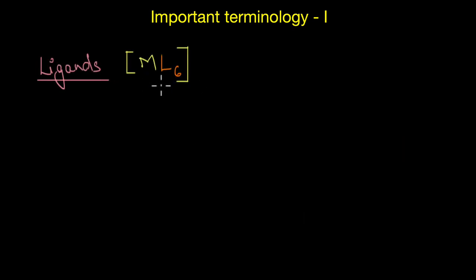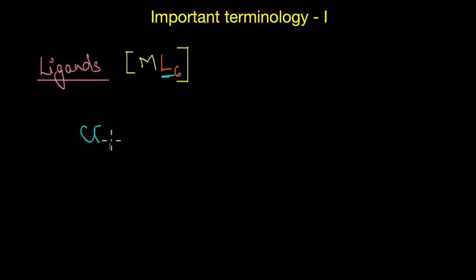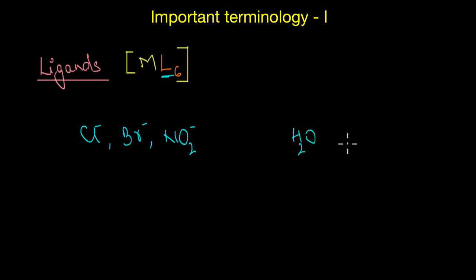Let's now talk about one of the most important terms: ligands. The ions or molecules that are bound to the central metal atom or ion within the coordination entity are called ligands. The ligands can be negatively charged ions like Cl−, Br−, NO2−, or even neutral species like water or ammonia. The common factor is that these ions or molecules are electron-rich species and can donate electrons to the central metal atom.